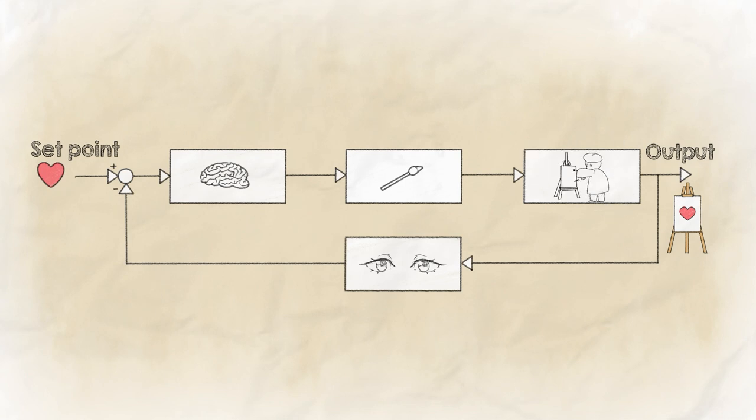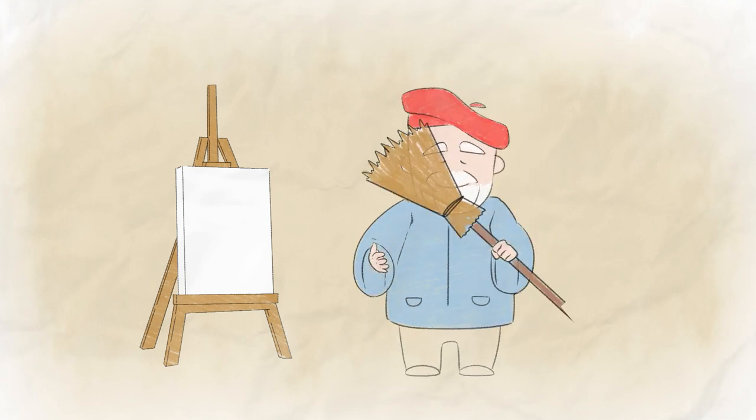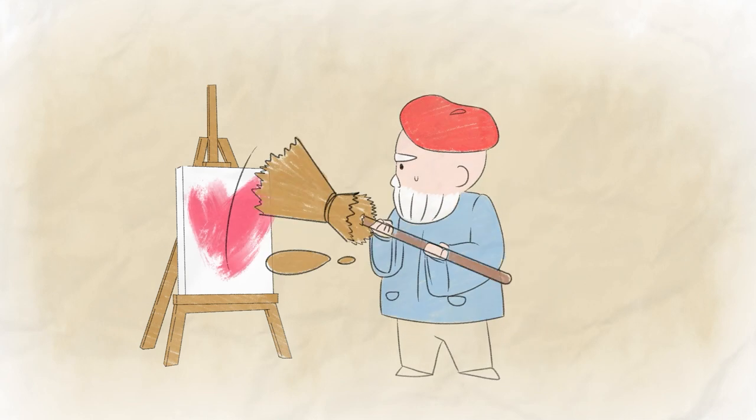Let's carry out a quick experiment with Leonardo. The choice of the proper actuator is essential to fulfill the mission. Suppose the actuator is missing or faulty. If Leonardo uses a broom instead of a brush, his heart is going to look like that.